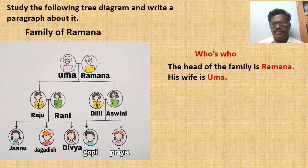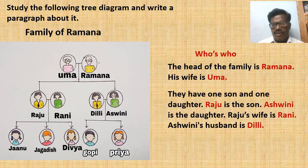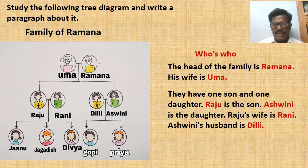First one: the head of the family is Ramana and his wife is Umma. They have one son and one daughter. Raju is the son and Asvini is the daughter. Raju's wife is Rani. Asvini's husband is Dili.